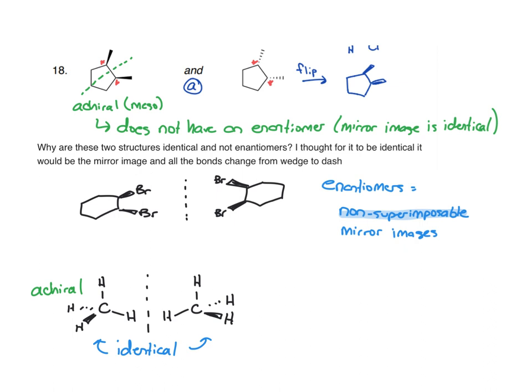And the same thing is true for this dibromocyclohexane. Even though we have chiral centers, there's a plane of symmetry. So that makes the mirror image identical to the original. And we can see that if we just spin this molecule around on the page, it lines up perfectly with the original.